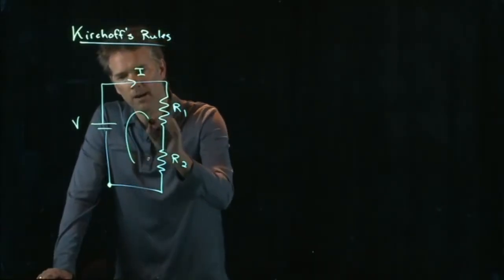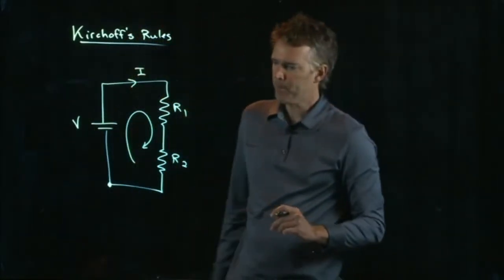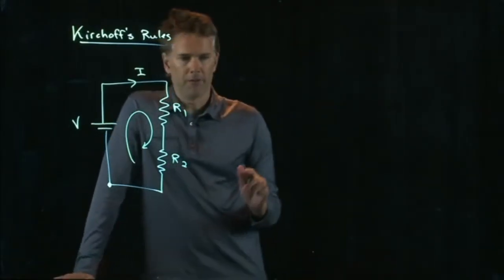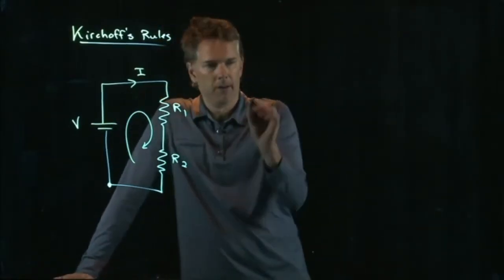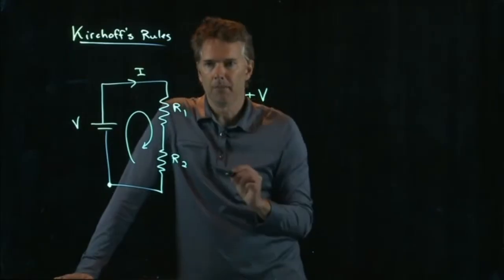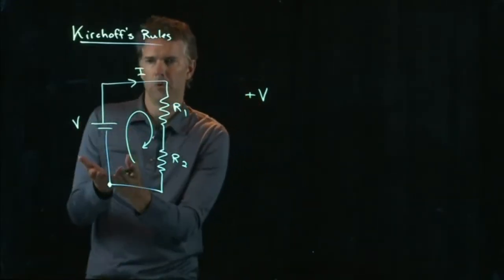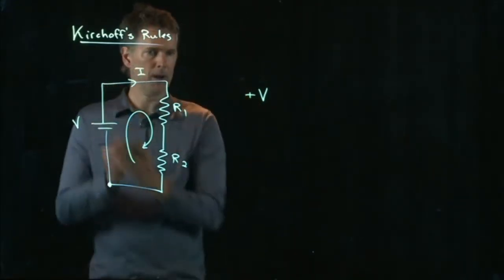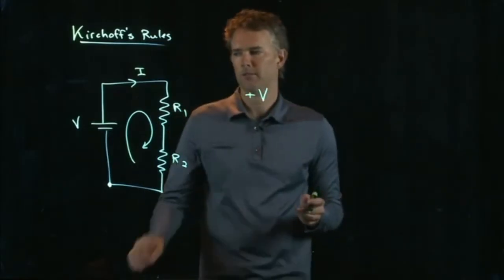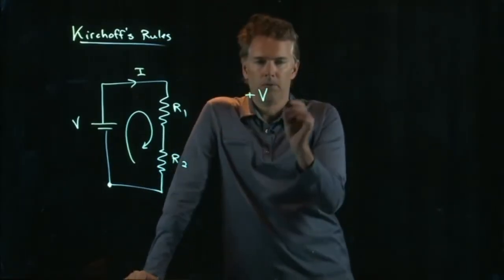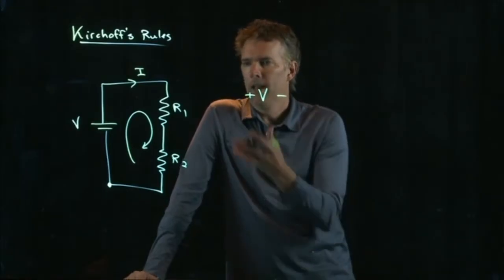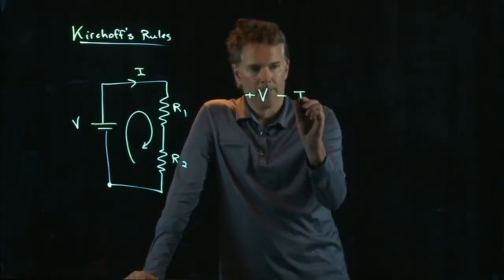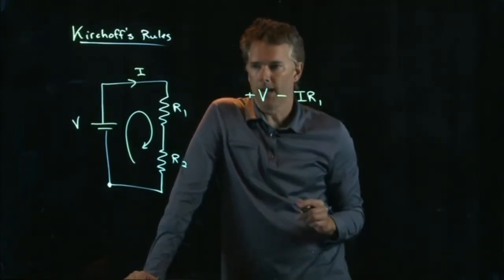let's start right there and we'll go around the circuit in that direction. So the first thing we do is we hit the battery. That's positive. We've gone from the negative terminal up in voltage to the positive terminal, so we have a plus V. And then we go through resistor R1. That's a voltage drop of IR1.